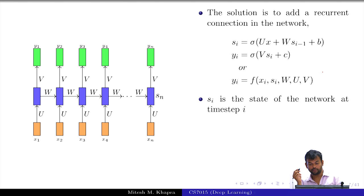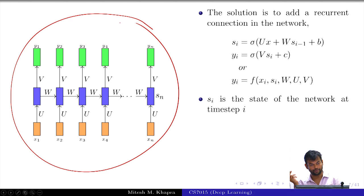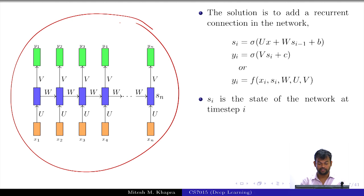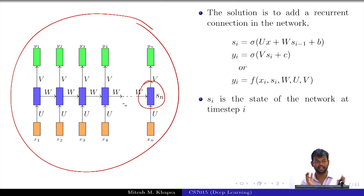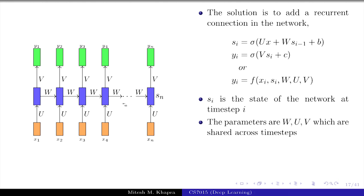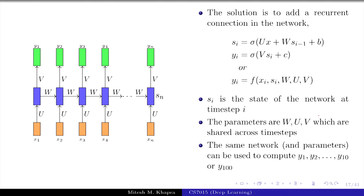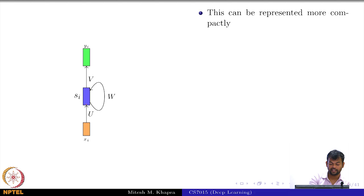Si is called the state of the network at time step i, and this is known as a recurrent neural network because of this recurrent connection. When you start working in deep learning and dealing with sequence problems, the state of an RNN, LSTM, or GRU is something you will hear often. This is what we mean by the state of the recurrent neural network — it encodes everything that has happened so far, an encoding of all the inputs seen. The parameters of the network are W, U, and V, shared across time steps, and the same network is executed at every time step.